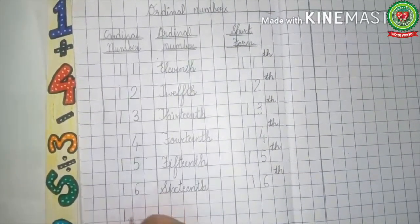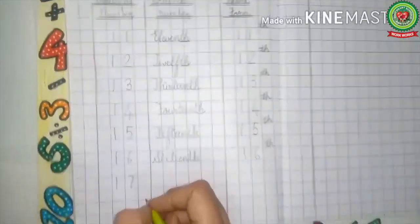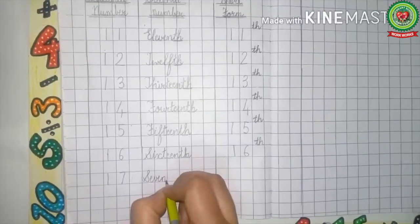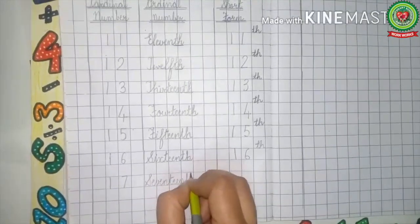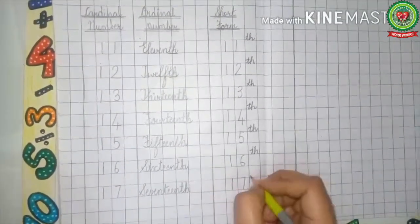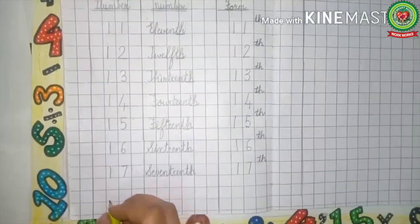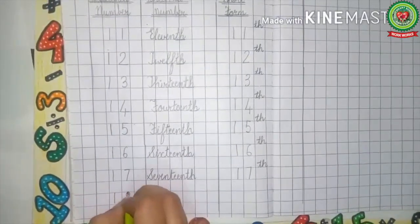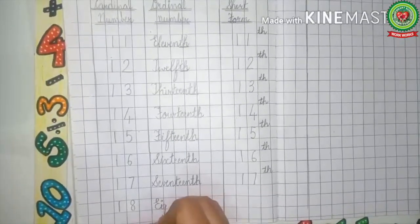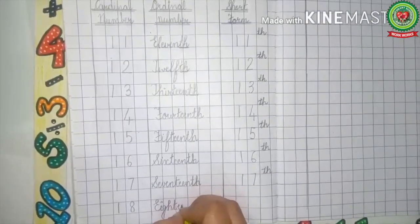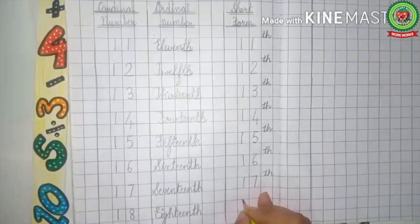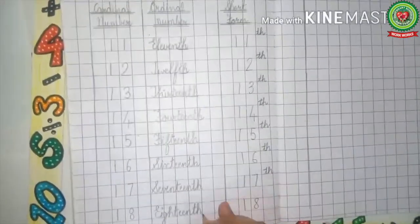After 16 comes 17, and the ordinal number of 17 is 17th. In the short form it is also 17th. After 17 comes 18, and the ordinal number of 18 is 18th. Spell 18 with me: E-I-G-H-T-E-E-N, and add TH. It becomes 18th. The short form is 18 and add TH.